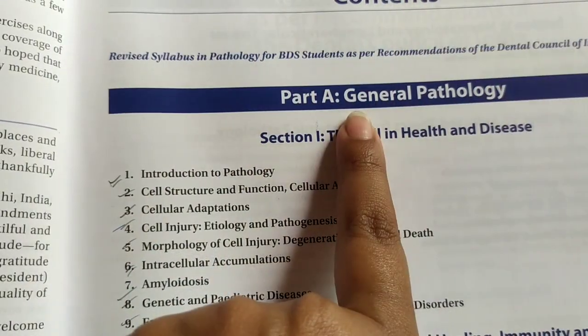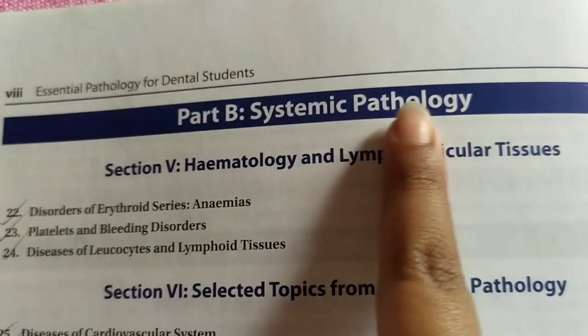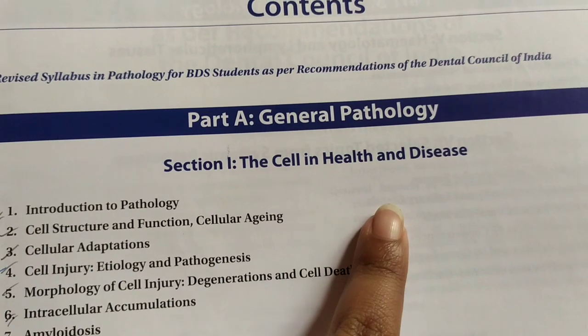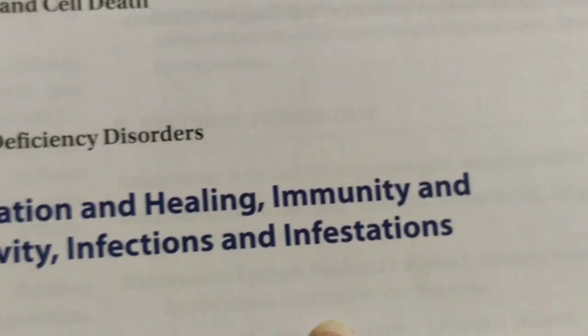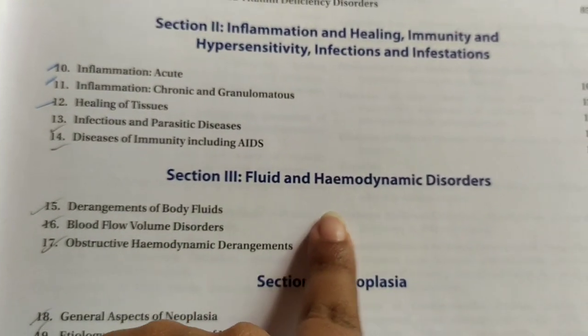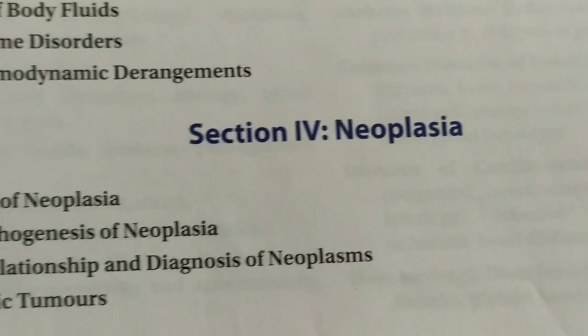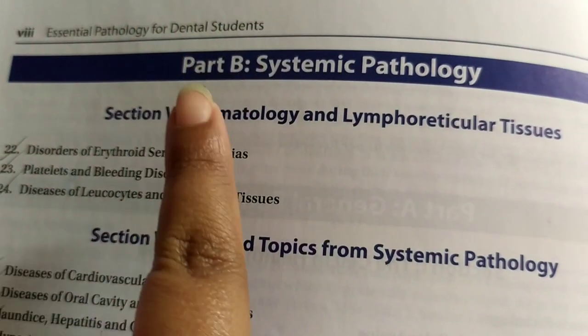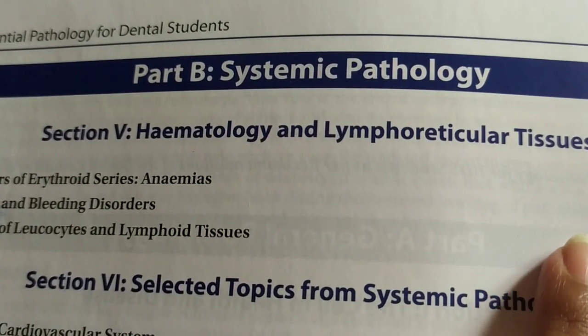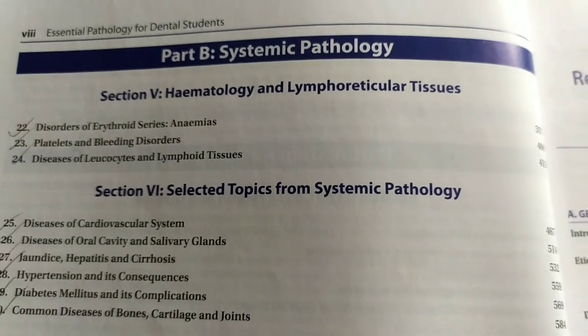I'm not going to go into detail on the theory part — you can complete that yourself — but I'll give a brief about the chapters. The theory consists of two parts: Part A and Part B. Part A consists of general pathology and Part B consists of systemic pathology. General pathology has four sections: the cell in health and disease; inflammation and healing; immunity and hypersensitivity; infection and infestation — a very important chapter; fluid and hemodynamic disorders; and neoplasia. In systemic pathology we have hematology and lymphoreticular tissues, and selected topics for systemic pathology including oral cavity and salivary glands, which is very important for dental students.